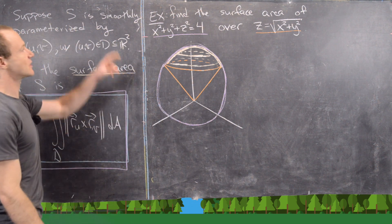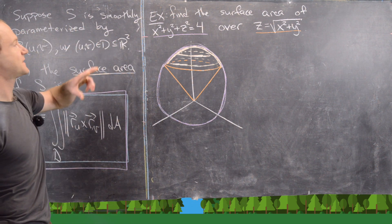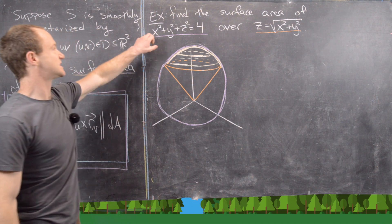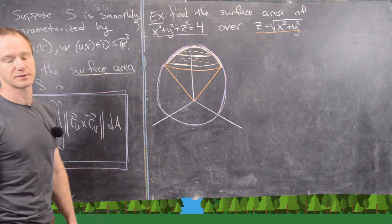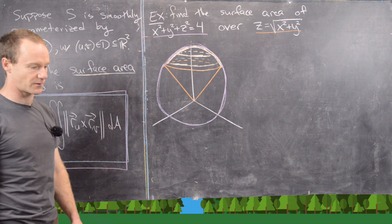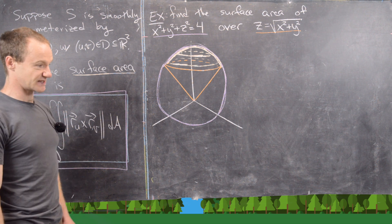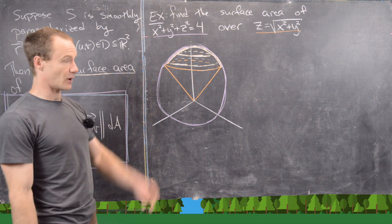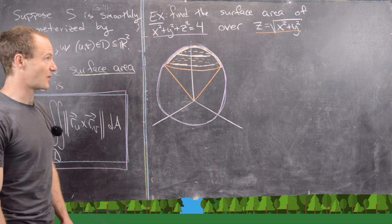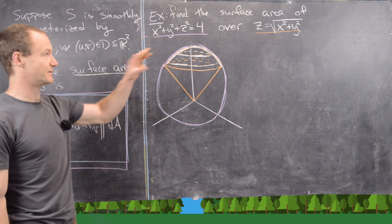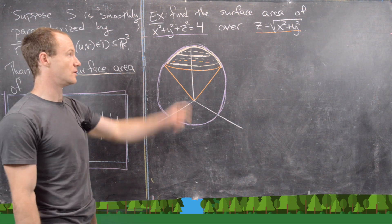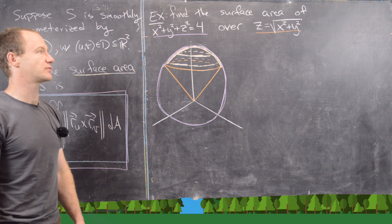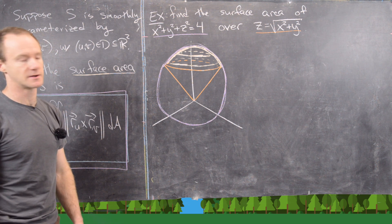What we want to do here is find the surface area of the sphere x² + y² + z² = 4, which is a sphere of radius 2. But we don't want the whole sphere — we just want the part of the sphere that's above the cone z = √(x² + y²).